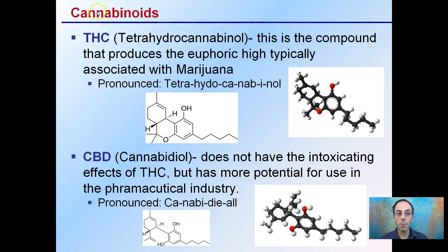The cannabinoid THC — tetrahydrocannabinol — is the compound that produces the euphoric high typically associated with marijuana. This is what it looks like on a chemical structure.